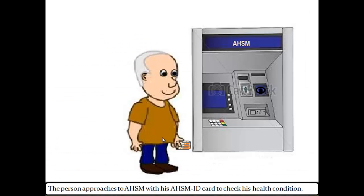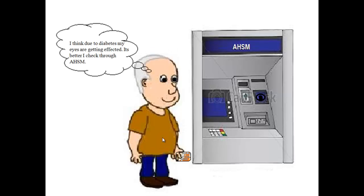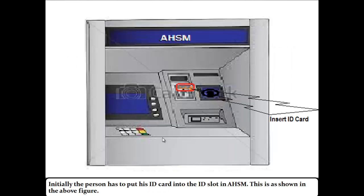Let's consider an example. Here, the person is approaching the AHSM with his AHSM ID card to check his health condition. This person feels that he is getting some problem in his eyes due to his diabetic condition. Initially, the person has to put his ID card into the ID slot of the AHSM, as shown in the above figure.